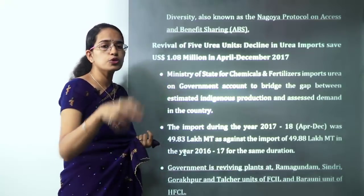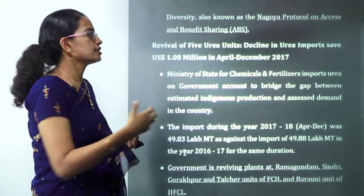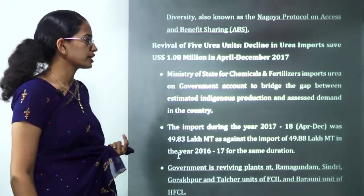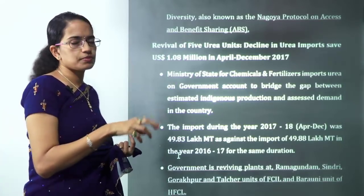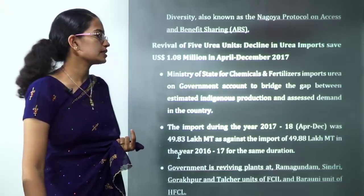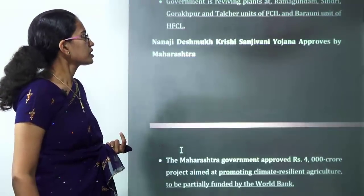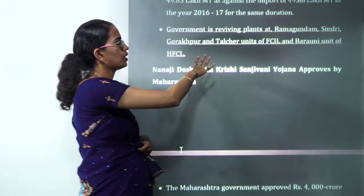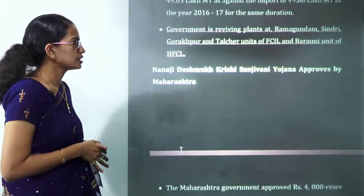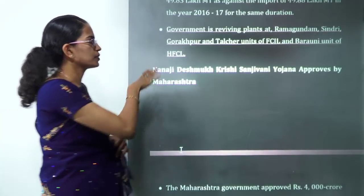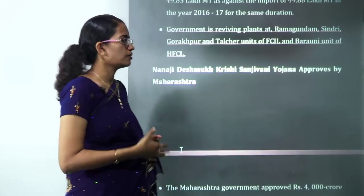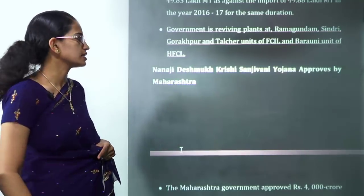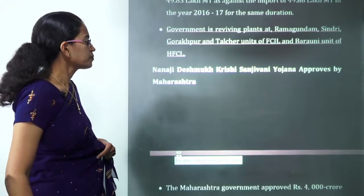New urea units are being created in India to reduce dependence on urea imports. Urea is a primary requirement in India's fertilizer industry. The plants being revived include Ramagundam, Sindri, Gorakhpur, and Talcher units of the Fertilizer Corporation of India Limited, and the Barauni unit of Hindustan Fertilizers.